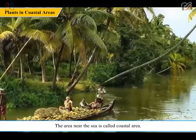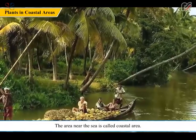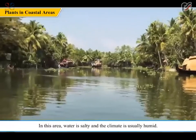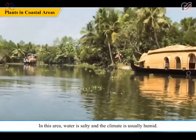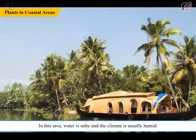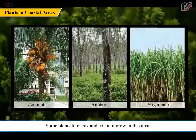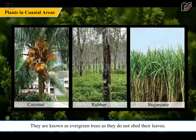The area near the sea is called a coastal area. In this area, water is salty and the climate is usually humid. Some plants like teak and coconut grow in this area. They are known as evergreen trees as they do not shed their leaves. Rubber, pepper, and sugarcane also grow in such climate.